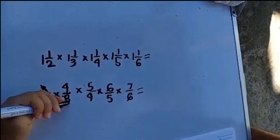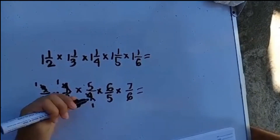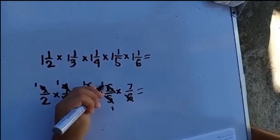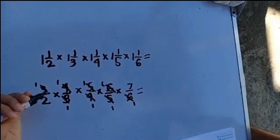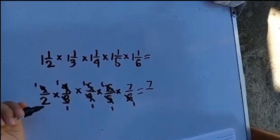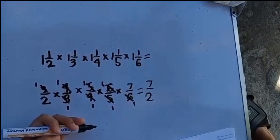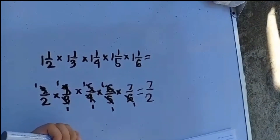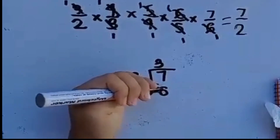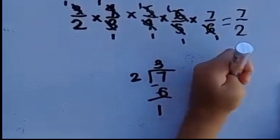6 times 1 plus 1 equals 7 over 6. Just like what we did earlier, we have to use cancellation. After cross-cancellation, 1 times 1 times 1 times 1 times 1 times 1 equals 7 on top, and 2 times 1 times 1 times 1 times 1 equals 2 on the bottom. Since we have an improper fraction, let's change it to mixed form by dividing 7 by 2. So the answer for this equation is 3 and 1 half.